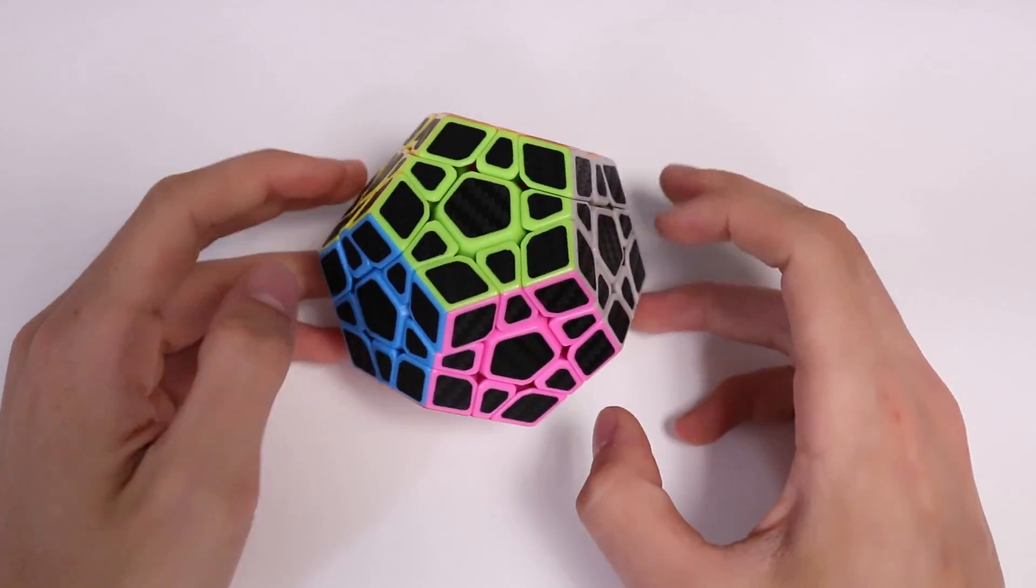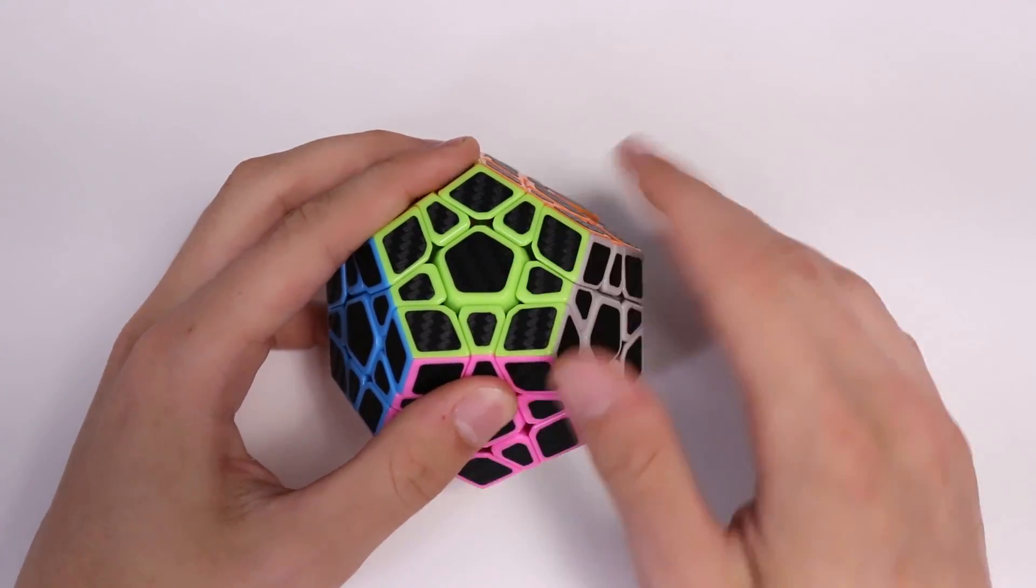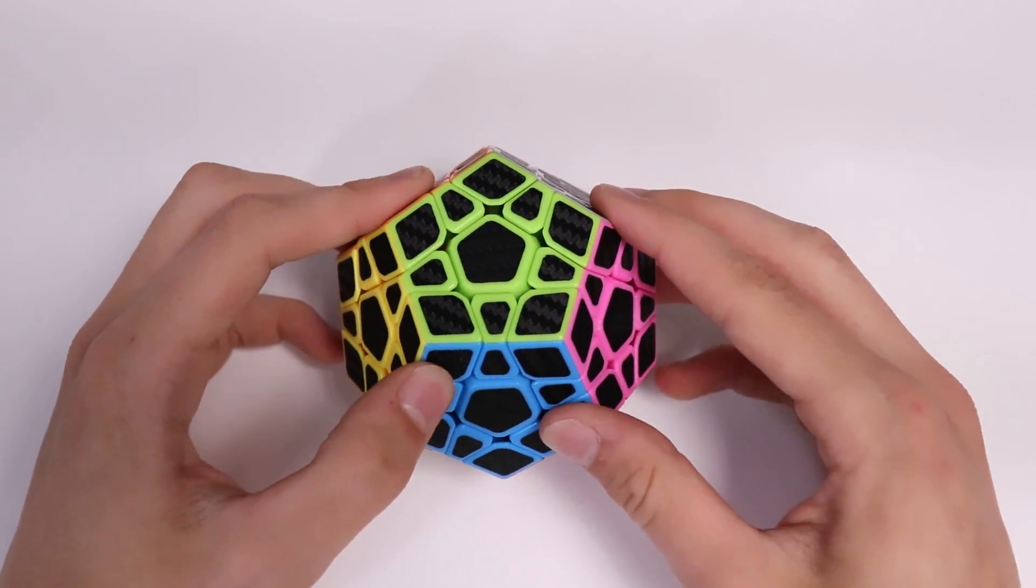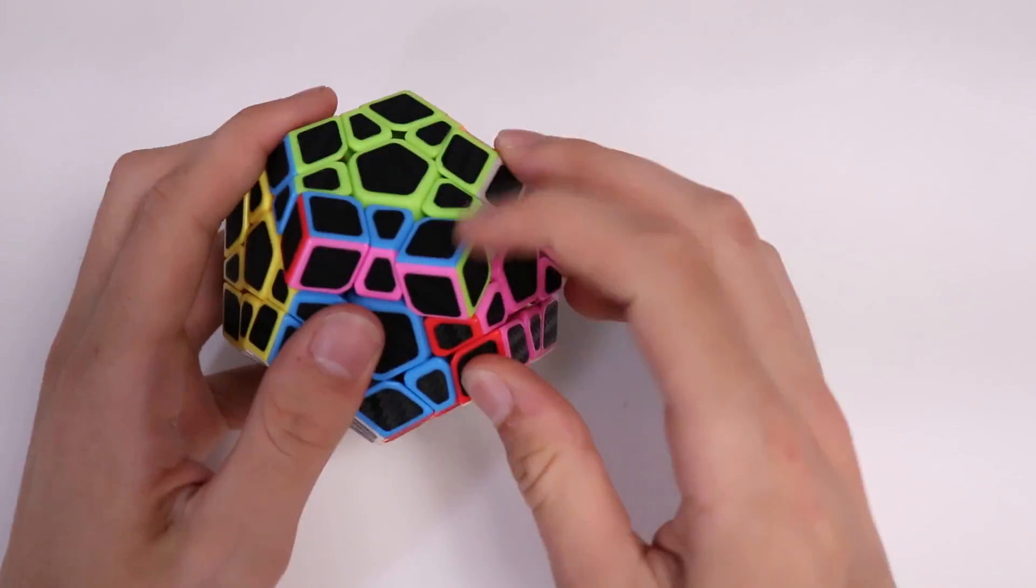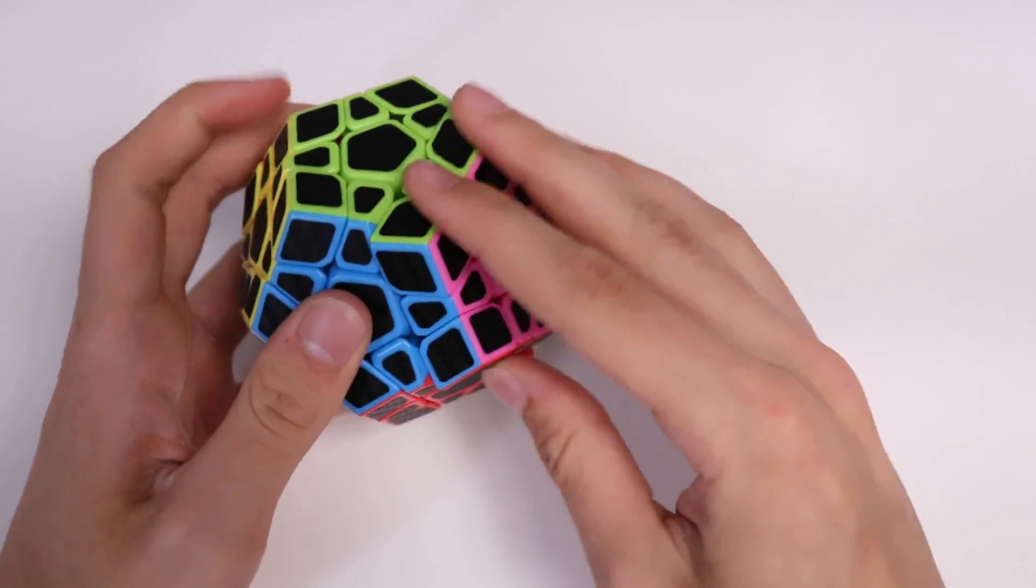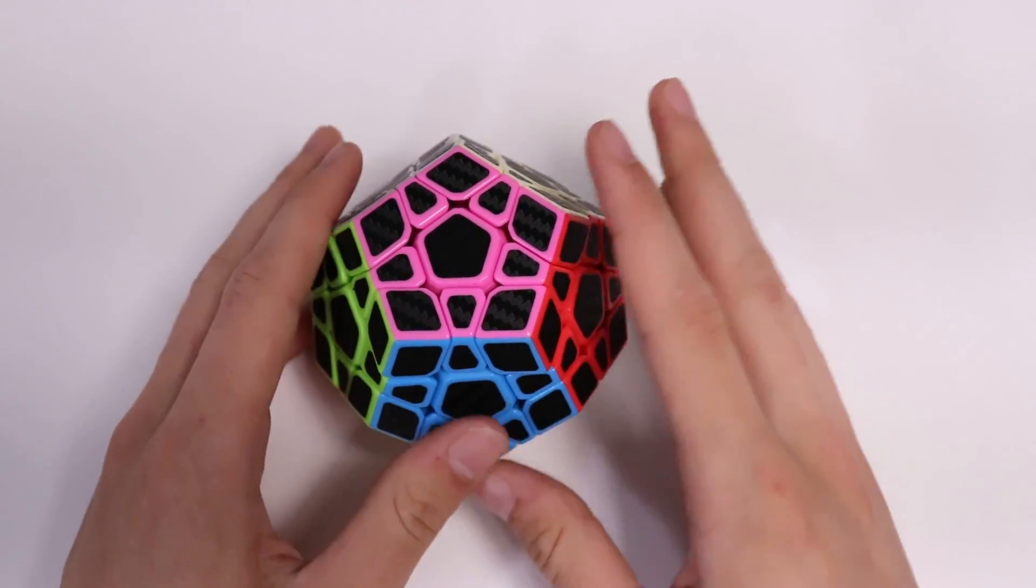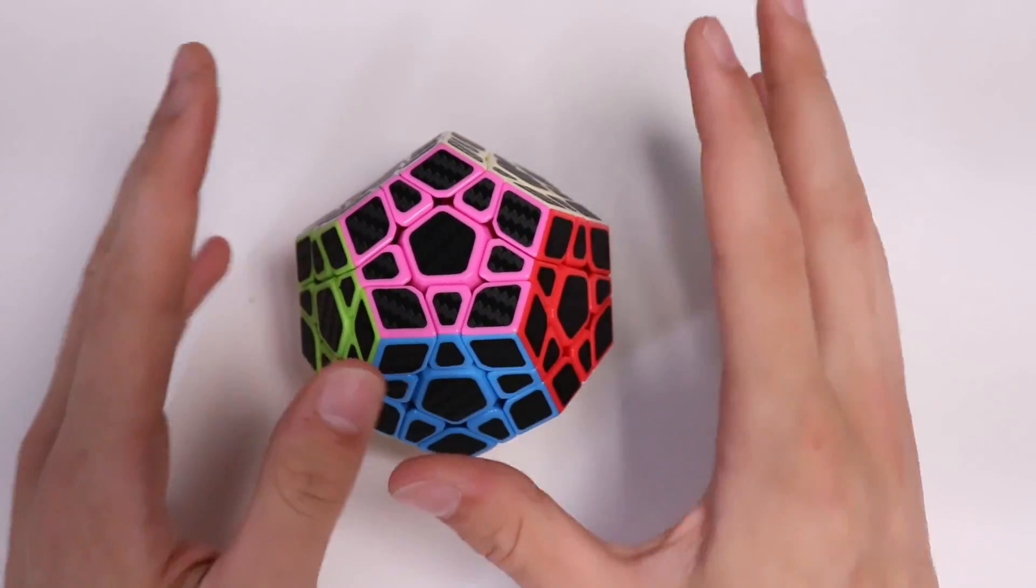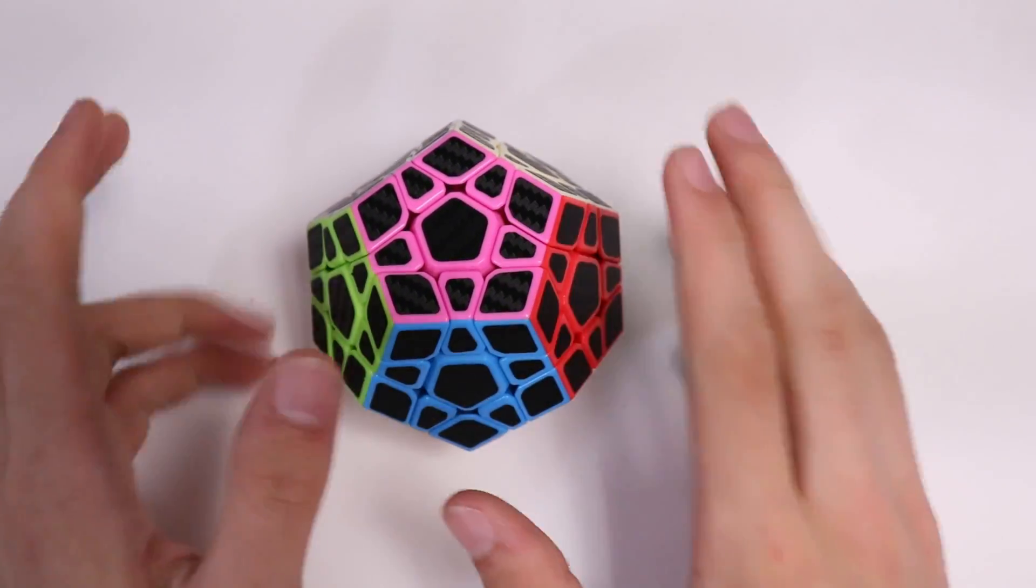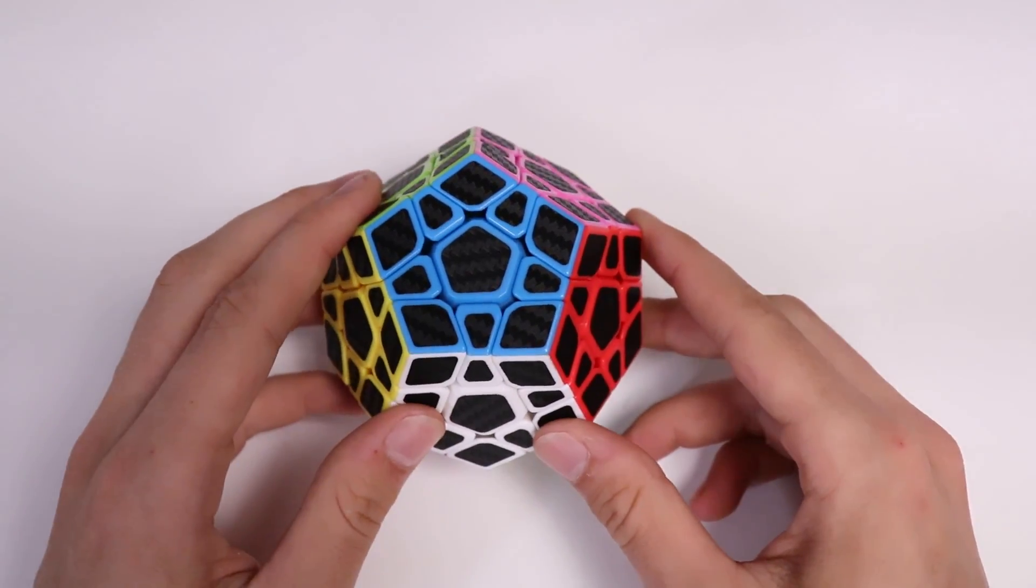Another thing worth noting about this cube is that it doesn't have any ridges or grips or anything, and it's slippy. That's sort of the main idea behind why I'm not totally 100% on board for this puzzle.